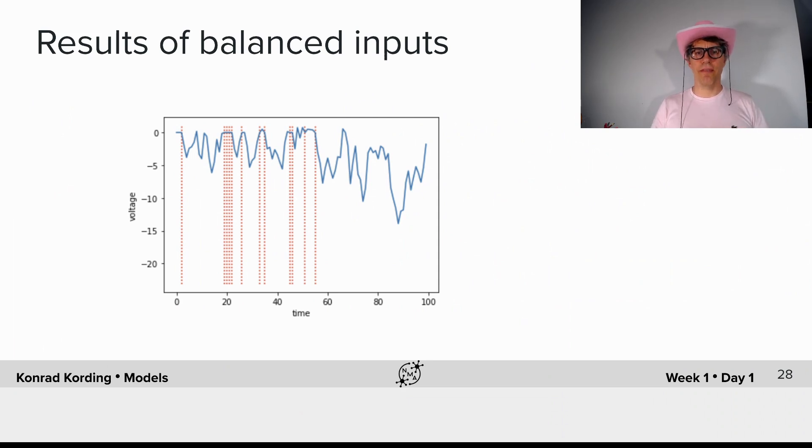So what do we find here if we have integrate-and-fire with balanced input? We now find something that looks much more like real neurons. We find a spike here, then for a long time it never quite spikes.